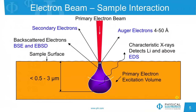The electron beam sample interaction chart shown here nicely demonstrates the complementary nature, at least in terms of the depth of analysis of these different options. We can see the Auger electrons are coming from the top few atomic layers, 4 to 50 angstroms in depth. The secondary electrons are coming from that same region, plus a little bit deeper. Coming from 10 to 100 nanometers deep, we have the backscattered electrons, used for the BSE and EBSD techniques. And finally, we have the characteristic X-rays produced from electron beam bombardment that are coming from half a micron to 3 microns in depth, depending on the beam energy and the material being analyzed.